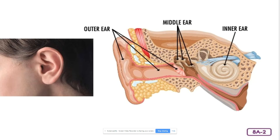Mammals are the only animals with outer ears. The outer ear consists of flaps on either side of your head, the ear canal, and the eardrum. Your outer ear flaps are called pinna. They are made of skin and tough elastic tissue called cartilage. Your ears, nose, and the ends of your bones contain cartilage. The bottom part of your ear flap, or pinna, is called an earlobe. It is much softer than the top part because it doesn't contain any cartilage. Some earlobes are attached to the side of the head, whereas others dangle loose.